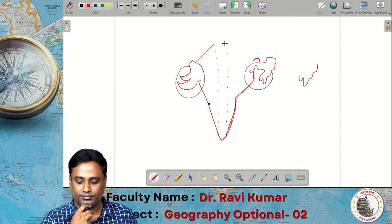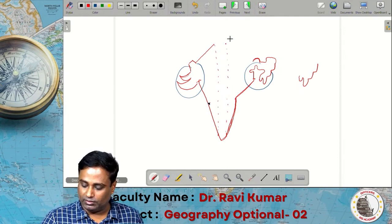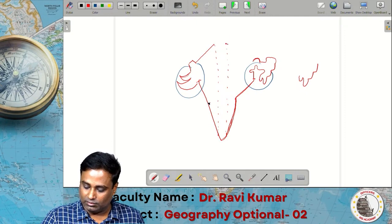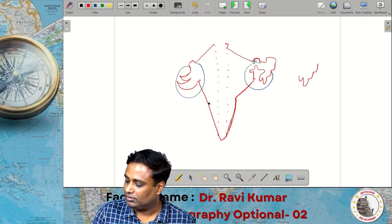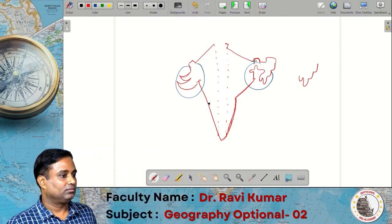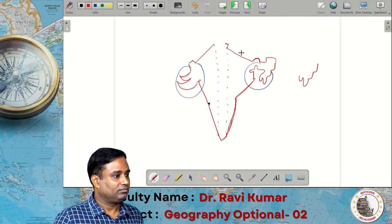This is the first one and this is going to be the next section. From here, you make an L shape and connect it here. What is this? Himachal Pradesh.